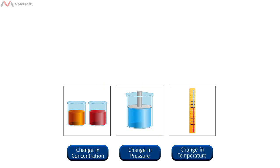Le Châtelier's principle states that if an external stress is applied to a system at equilibrium, the system adjusts in such a way that the stress is partially offset. The word stress means a change in concentration, pressure, volume, or temperature. Click on one of the buttons below to view an animation showing the effect of these stresses on a system at equilibrium.